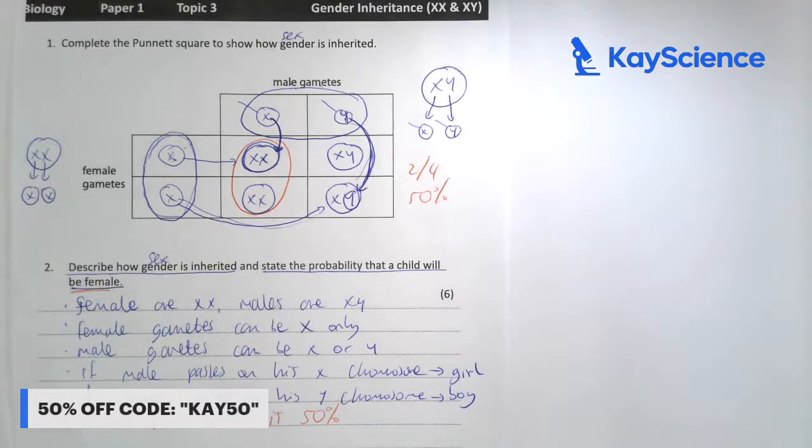So that was how sex is inherited. These questions will appear, so you're going to pause the live stream in a moment, and then the questions and answers will follow. That was KayScience's tuition on aspects of genetics. There's a code there for KayScience, which is KAY50.